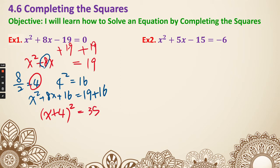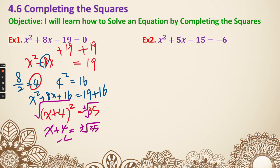The left side factors as x plus 4, squared, equals 35. Taking the square root of both sides, x plus 4 equals plus or minus square root of 35, which cannot be simplified. Subtracting 4 from both sides gives our final answer: x equals negative 4 plus or minus square root of 35.